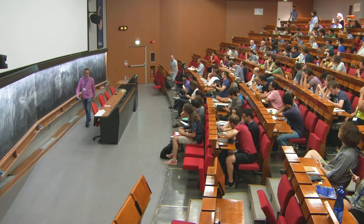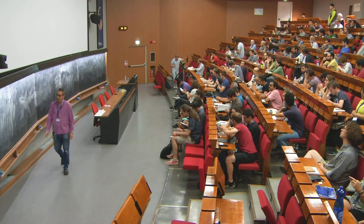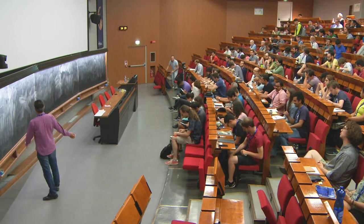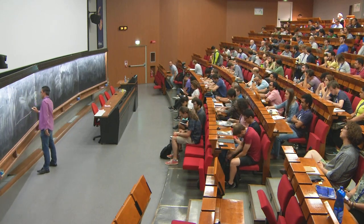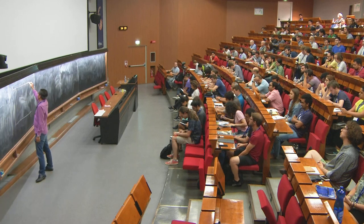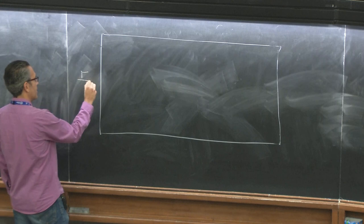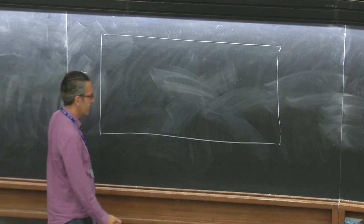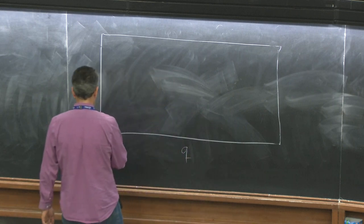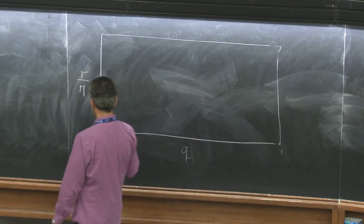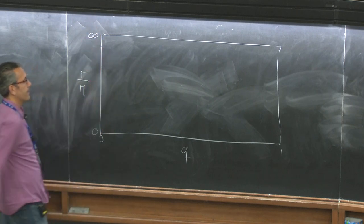Let's summarize a little bit where we were at last time. We had this little square with the separation and the binary on one axis, and the mass ratio on the other axis. I'm putting zero here, one here, another zero here, and infinity here.